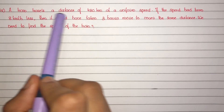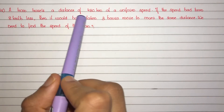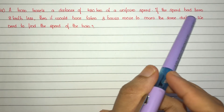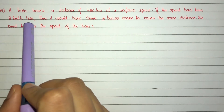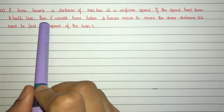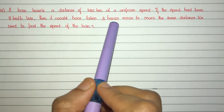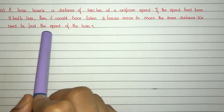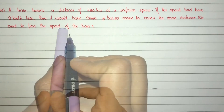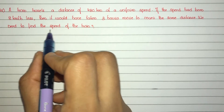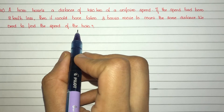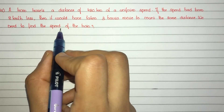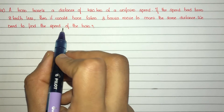A train travels a distance of 480 km at a uniform speed. If the speed had been 8 km per hour less, then it would have taken 3 hours more to cover the same distance. We need to find the speed of the train. The first step is to assume one variable: let x km per hour be the speed of the train.